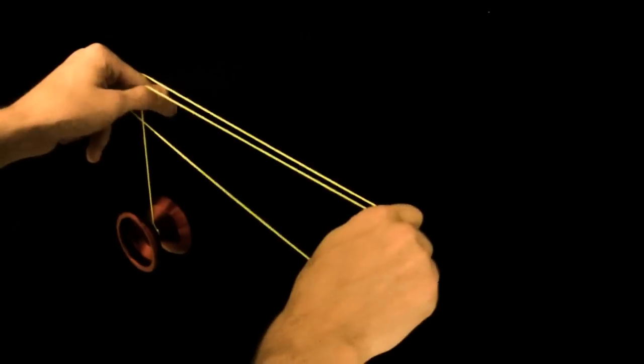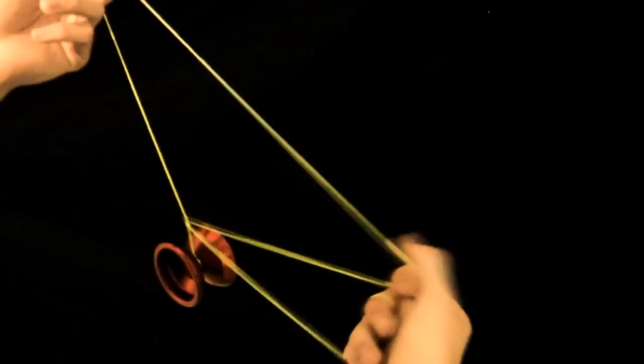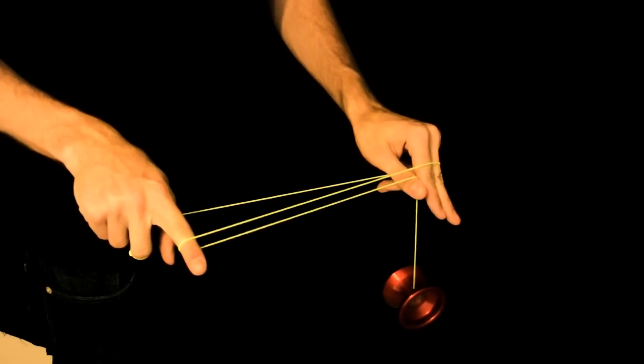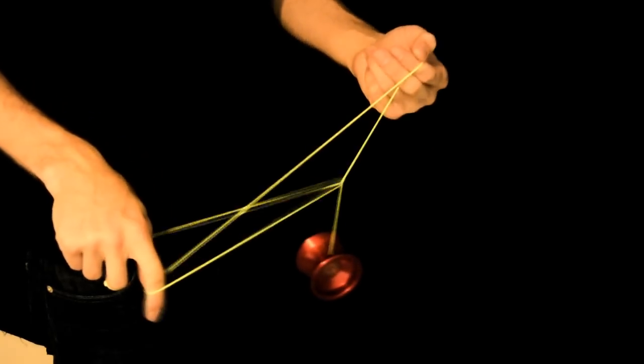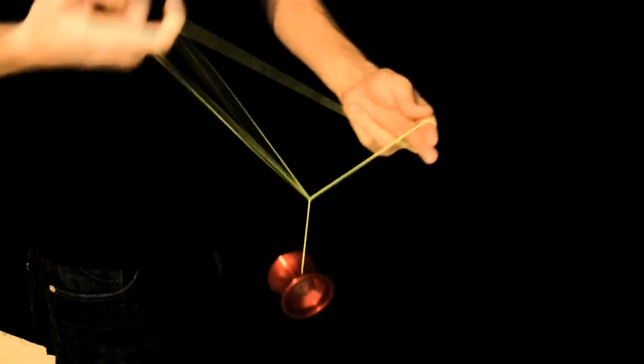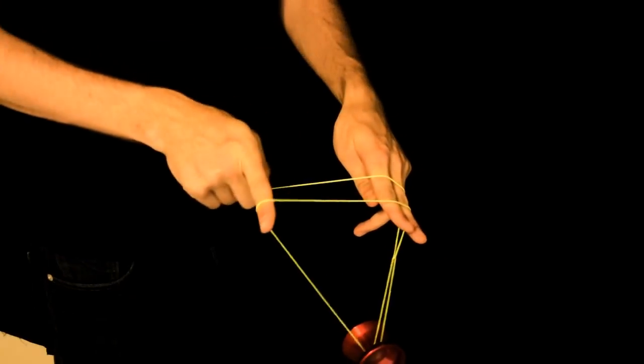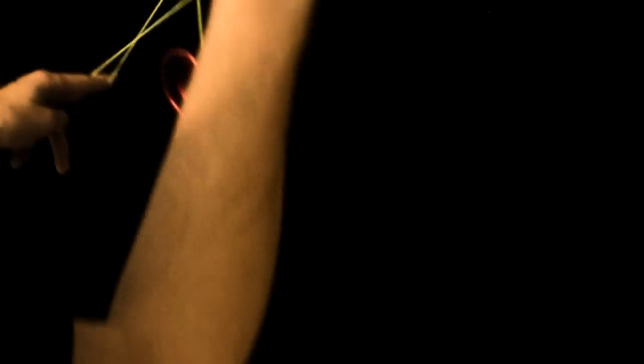Pinch the string using your non-throw hand thumb and index finger, then slide the string formation off your non-throw hand. Intercept the yoyo with the string closest to your body on the underside, then adjust your hands as shown.